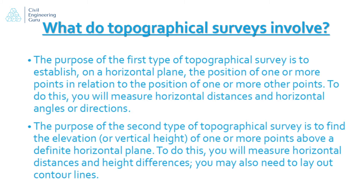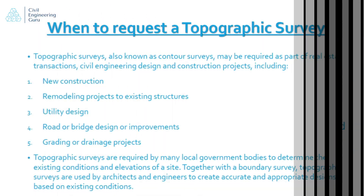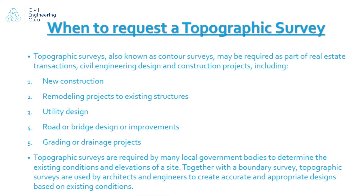The purpose of the second type of topographical survey is to find the elevation or vertical height of one or more points above a definite horizontal plane. To do this, you will measure horizontal distances and height differences. You may also need to lay out contour lines.